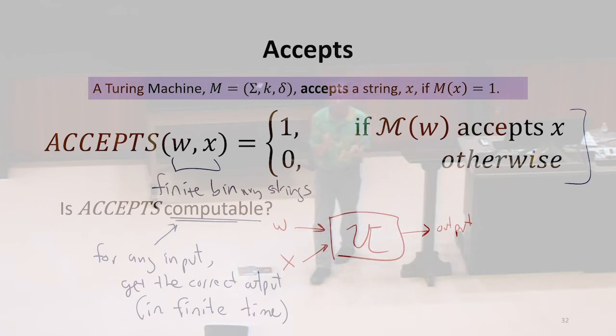What the universal Turing machine is doing is simulating m, so if m would not finish, the simulation won't finish either. So this doesn't compute accepts, because for some inputs, this might never finish. It might run forever. We don't know what the output is. We're not going to get the correct output if the simulation doesn't finish.